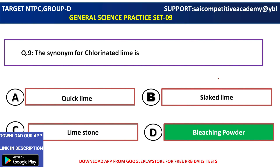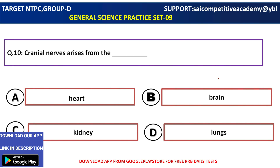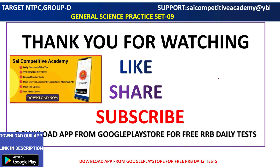Bleaching powder formula — comment on the bleaching powder formula. Cranial nerves arise from the brain — cranial nerves arise from the brain.